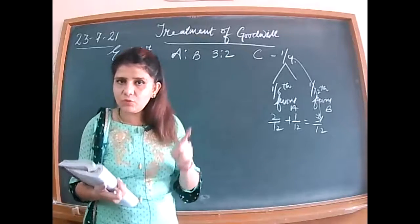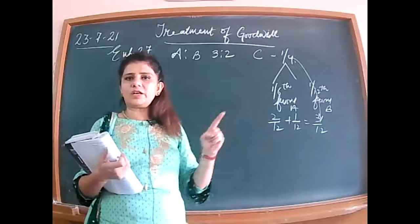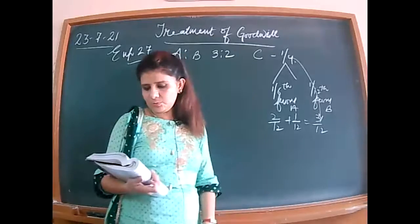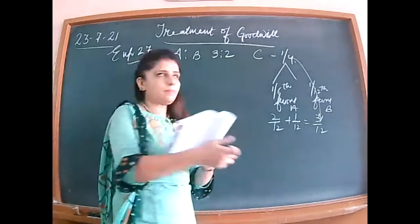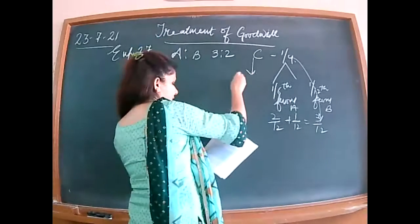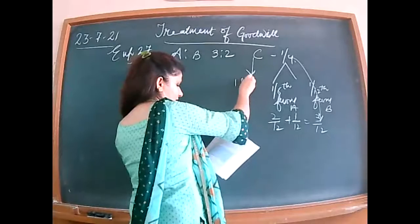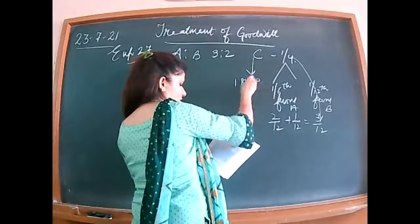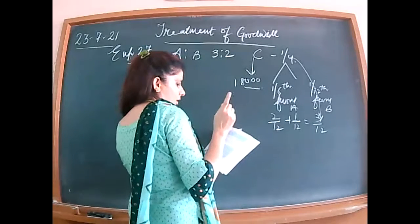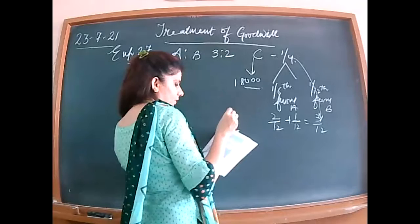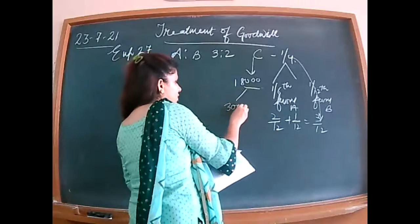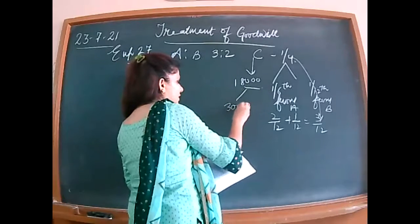The first entry will be to write off existing goodwill between the old partners in their old profit sharing ratio. C brings 18,000, out of which 30,000 was C's share of goodwill.